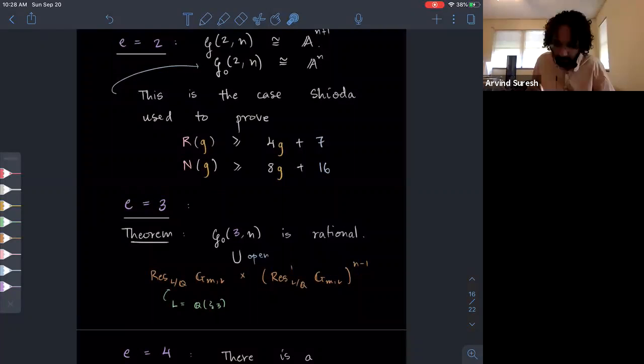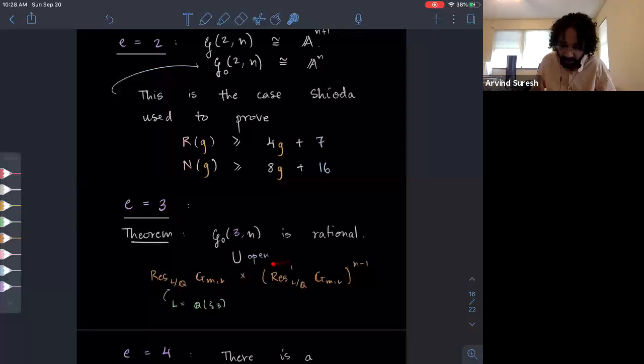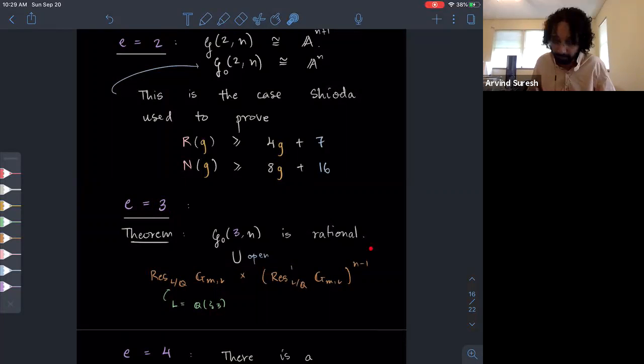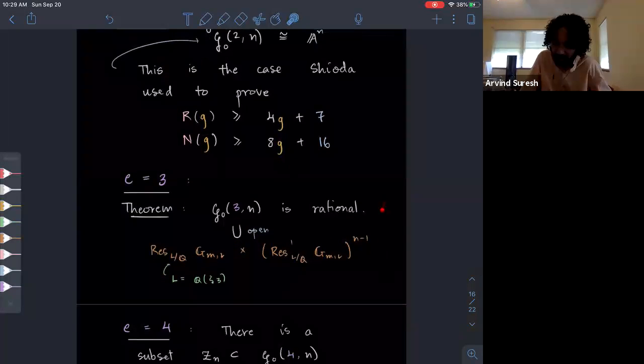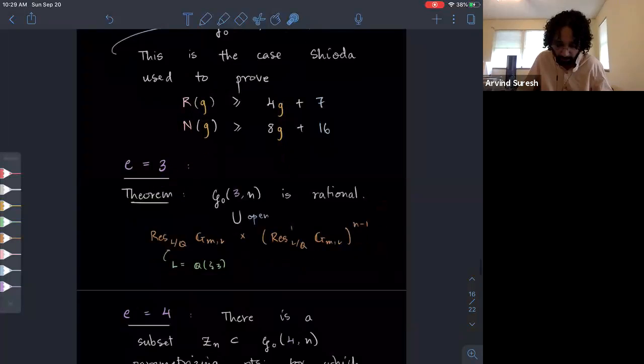In the E equals three case, the G naught of three of N is actually rational and is rational in a non-trivial interesting way, which is it contains this N plus one dimensional algebraic torus. Here, this is restriction of scalars. And this L here is Q join zeta three, the third cyclotomic field. Notice that E equals three and we're joining, we're getting the torus that's related to the third cyclotomic field. This is going to show up again in the case equals six. So I won't say more for now.